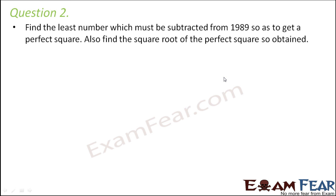Question number 2: Find the least number which must be subtracted from 1989 so as to get a perfect square. So let us first see if 1989 is a perfect square. With the division method you can decide whether a number is a perfect square or not. For perfect squares the final remainder will be 0. But if the final remainder is not 0 that means the number is not a perfect square. So let us try it out for 1989.